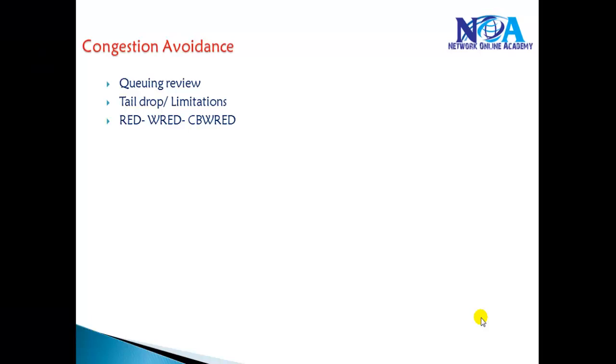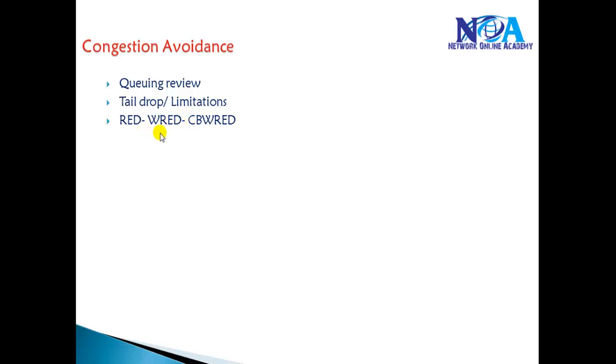In this section we'll talk about congestion avoidance mechanisms used on Cisco routers. We'll quickly revise some basic queuing mechanisms from previous sections, then understand what tail drop is and its limitations, and then see solutions to overcome the tail drop issues — specifically Random Early Detection (RED), Weighted RED, and Class-Based Weighted RED.